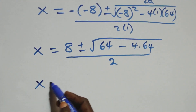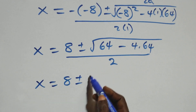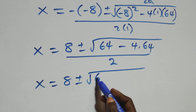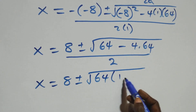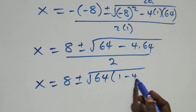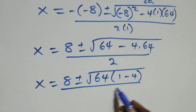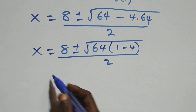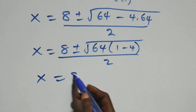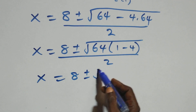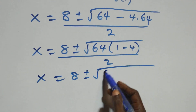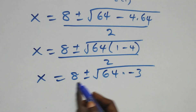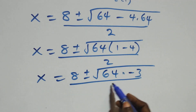We have x equals to 8 plus or minus square root of 64 — which is common — giving 64 times (1 minus 4), over 2. This is the same as x equals to 8 plus or minus square root of 64 times (−3), all over 2.